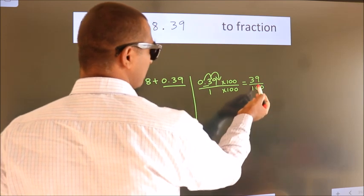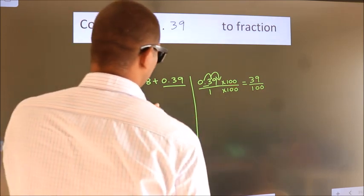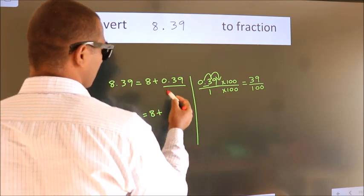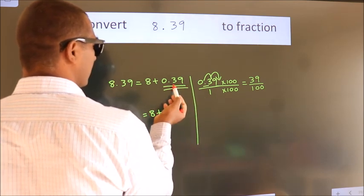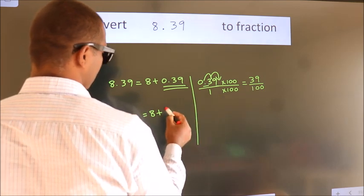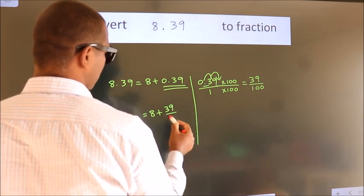This is the fraction we got. Now here, 8 plus, in place of 0.39, we write this fraction: 39 by 100.